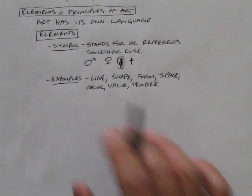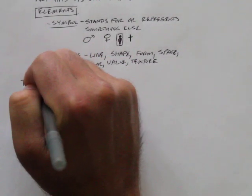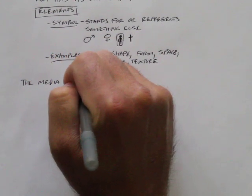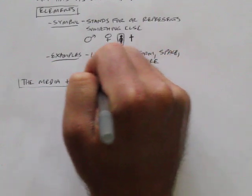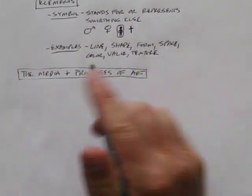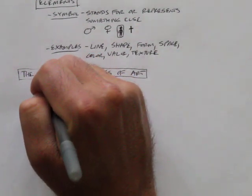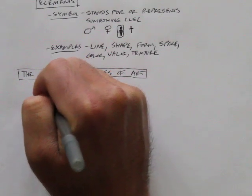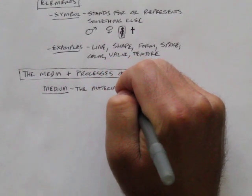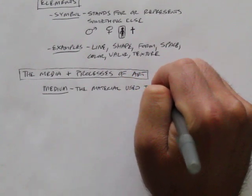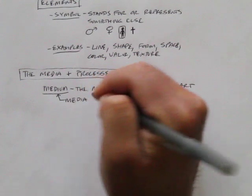And then this next bit here for the last of our notes, we're going to talk about the media and processes of art. So when we talk about media in art, we're not talking about the news media or anything like that. We're talking about what material is used to make the art. We call that media, we also call that medium. This is the material used to make the art.